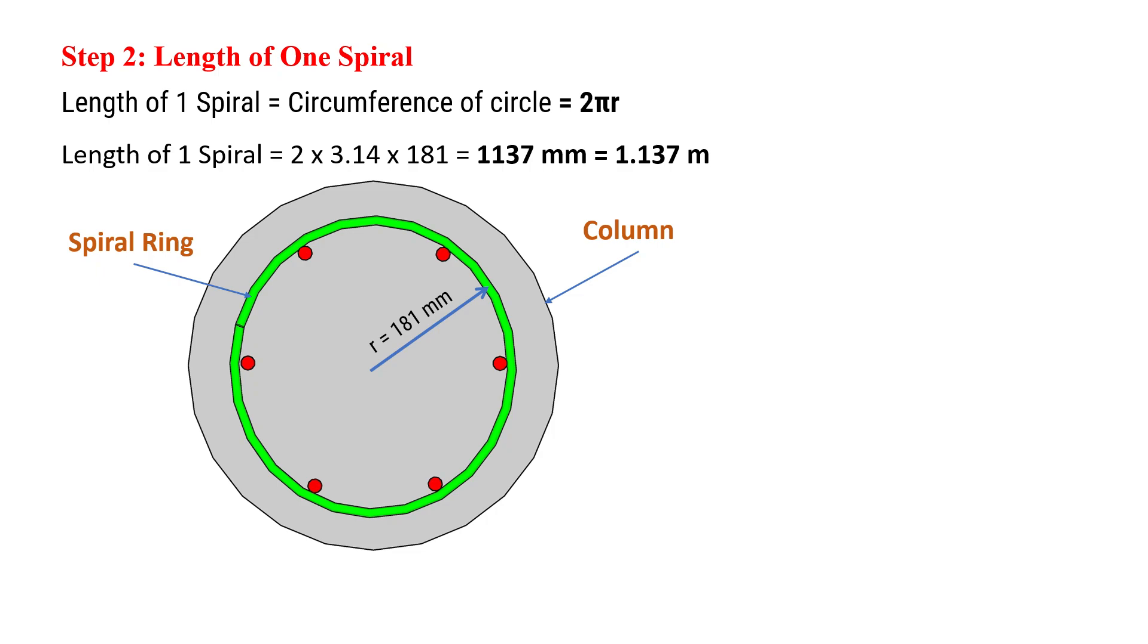On substituting these values, length of one spiral will be 1137 mm, or 1.137 meters.